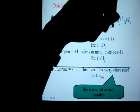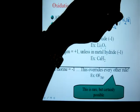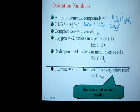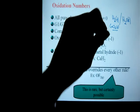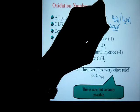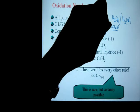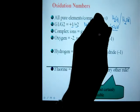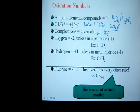For instance, sodium in a compound would always have a plus one charge. Calcium in a compound would always have a plus two charge. So for CaCl₂, calcium is in a compound, therefore the calcium is going to be plus two. Complex ions, or polyatomic ions, equal a given charge — so for instance, NO₃ is a nitrate ion in your polyatomic ion table and has a charge of negative one.